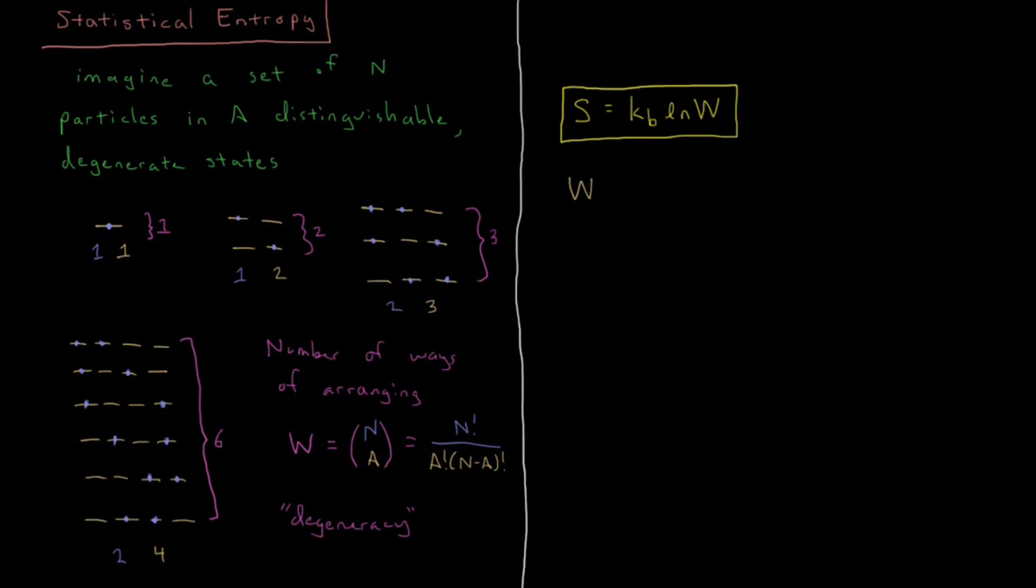So W of this combined state, let's say 1,2, is just the product of those two. It's going to be W1 times W2. That would be, if you could randomly choose two particles in one of these spaces and two particles in one of these states simultaneously. That would be a product of these two degeneracy factors.